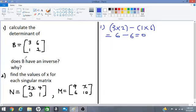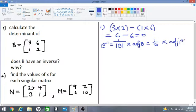Now the question asks if B has an inverse and let's see if B can have an inverse. So B inverse will be 1 over the determinant of B times the adjoint of B, adj for short, and that will be equal to 1 over 0 because the determinant is 0. So 1 over 0 times the adjoint of B.